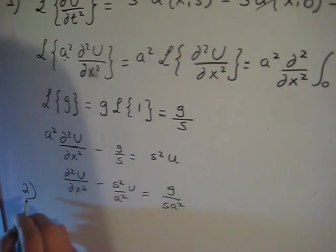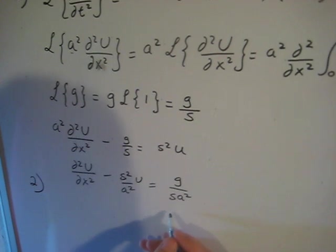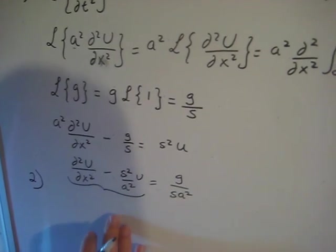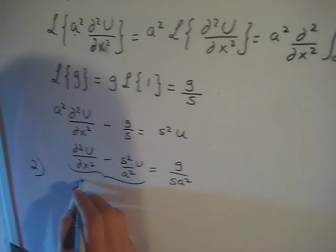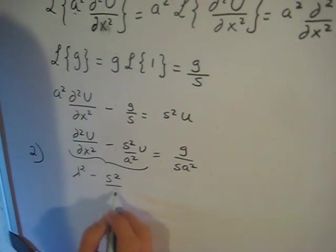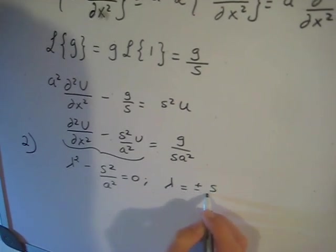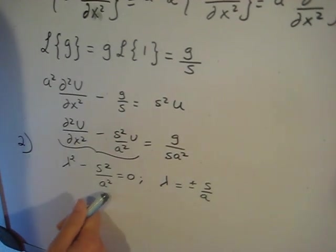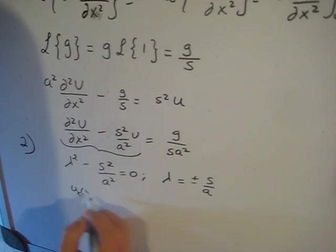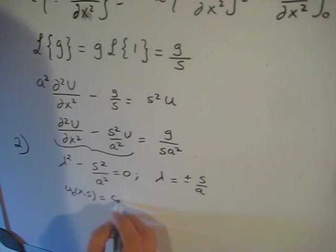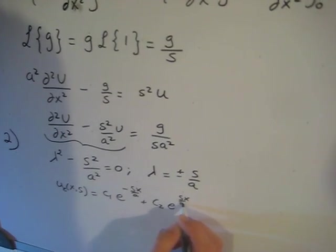For step two, we are going to look for a particular solution and a homogeneous solution. Starting with the homogeneous part, we look for a characteristic equation using the symbol λ: λ² minus s²/a² equals zero, which means λ equals ±s/a. The complementary solution is U_c(x,s) = c₁·e^(−sx/a) + c₂·e^(sx/a).